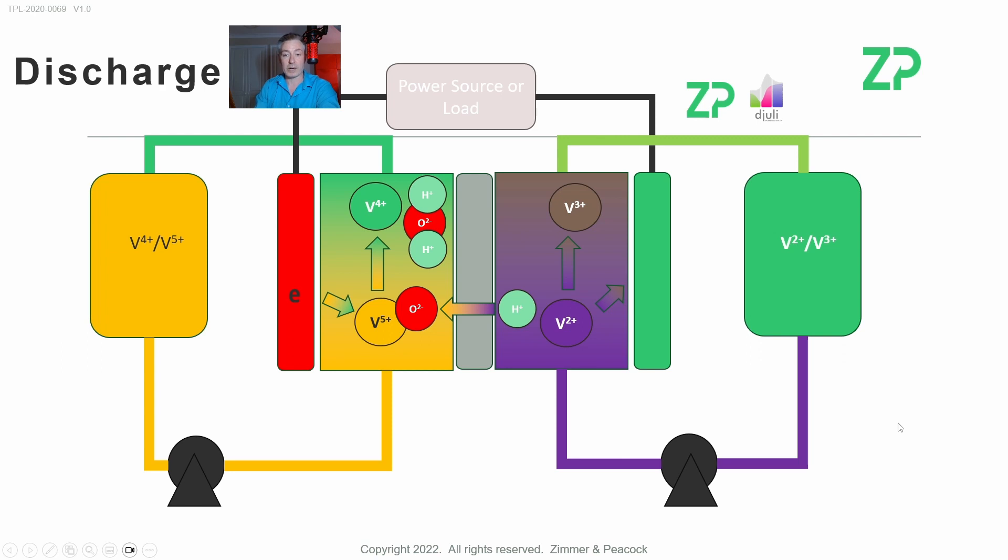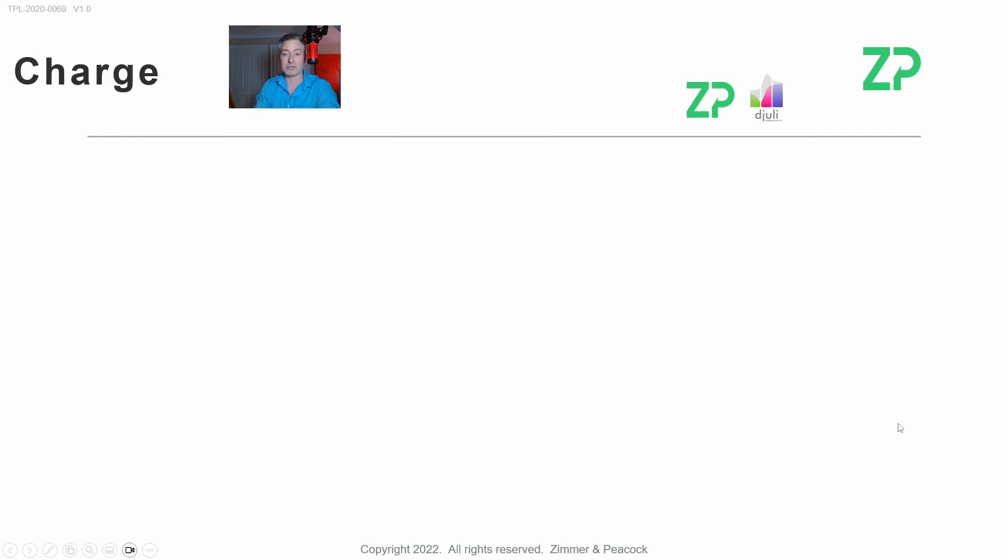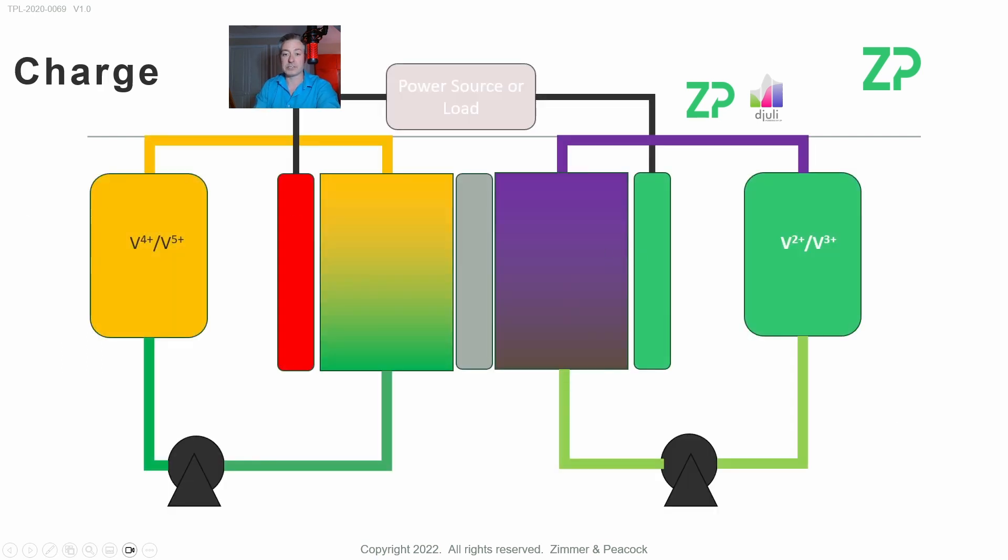vanadium redox flow battery. Now I'm going to talk about the charge cycle. In the charge cycle it's a similar story, but everything's in reverse. This time the battery got charged up during the daytime and we discharged it during the night.